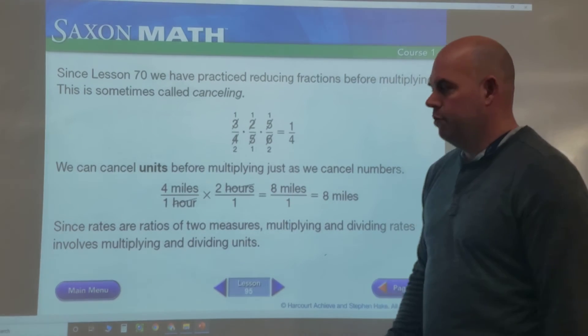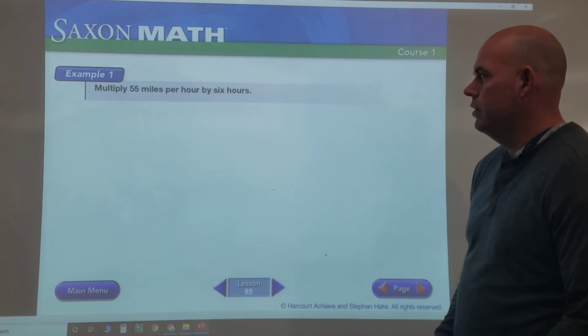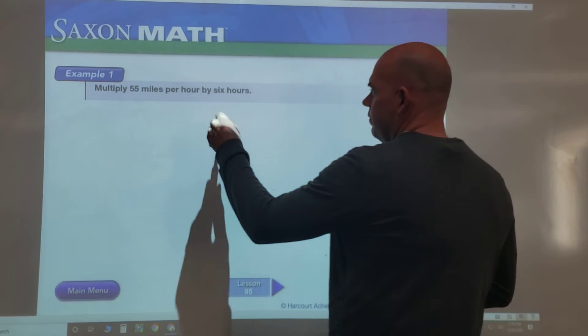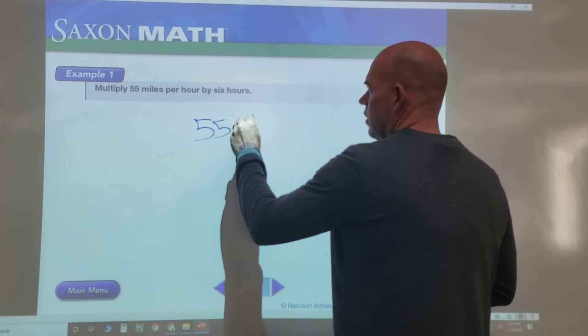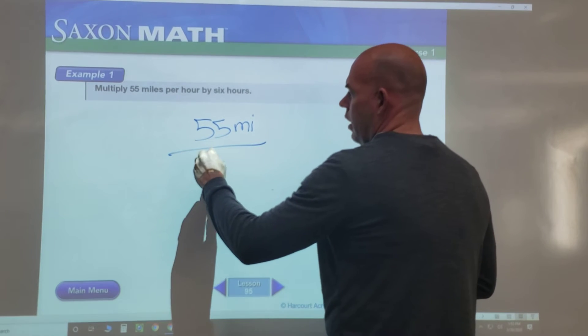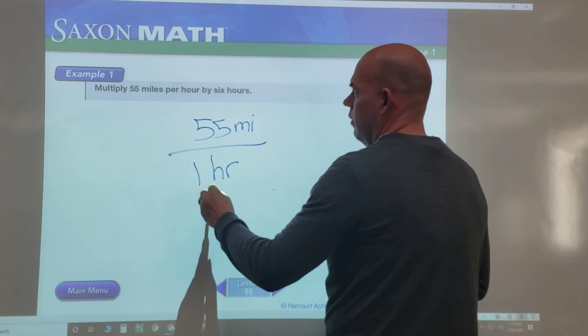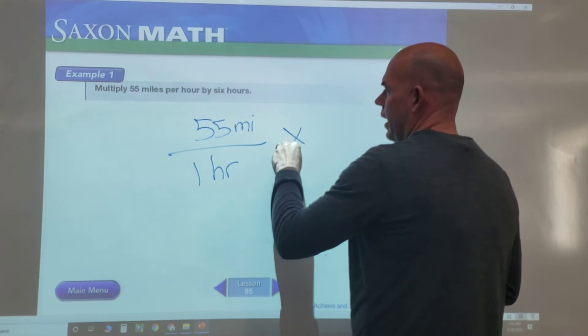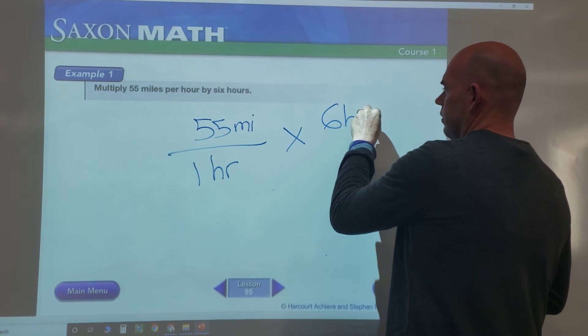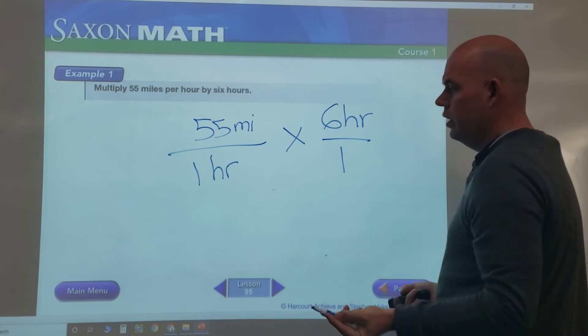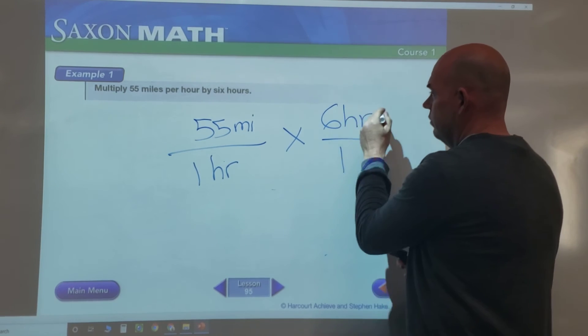So multiply 55 miles per hour by 6 hours. Now here we can use our canceling. We'll cancel out hour and hour.